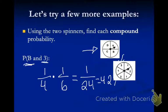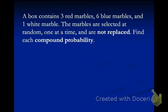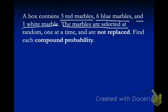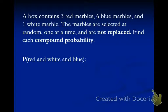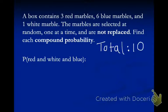There's not a very big probability that you would get both a B and a three. Next: a box contains three red marbles, six blue marbles, and one white marble. The marbles are selected at random, one at a time, and are not replaced. Find each compound probability. Not replaced means this is a dependent event — every time I take one out, I'm reducing the total. My total right now is three plus six plus one, which equals ten.